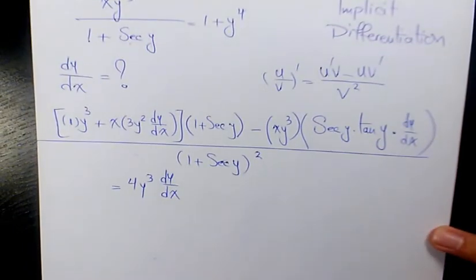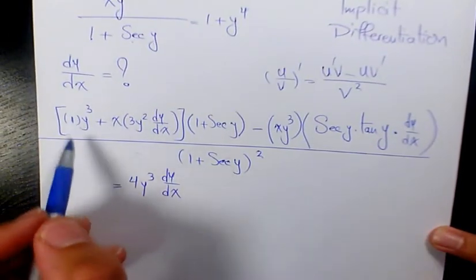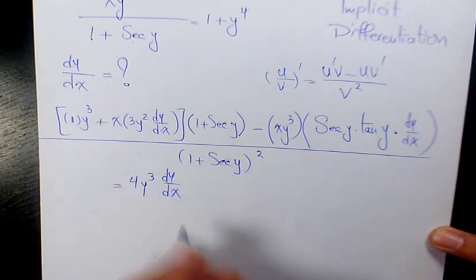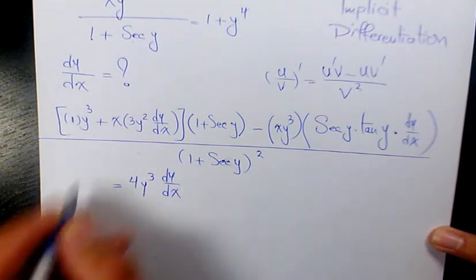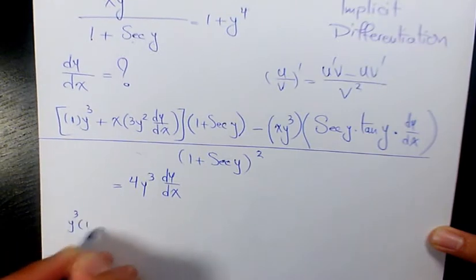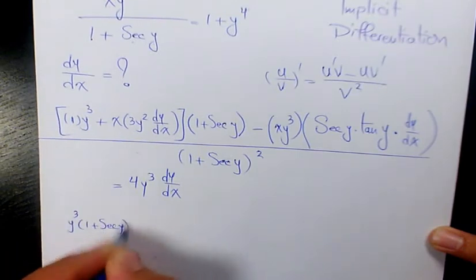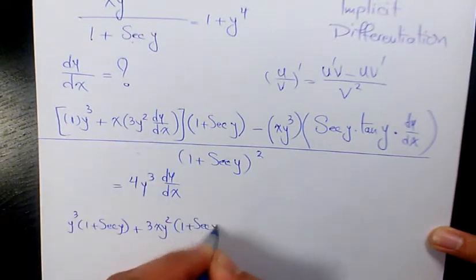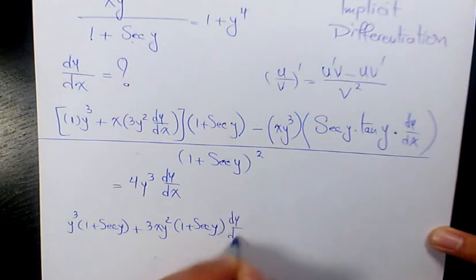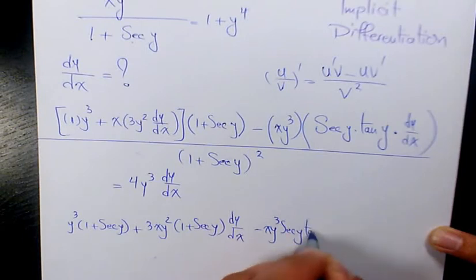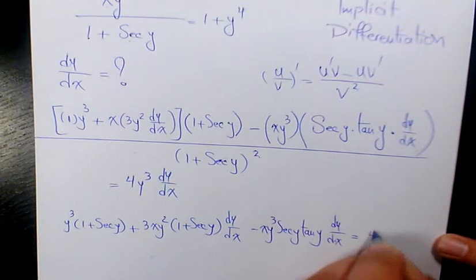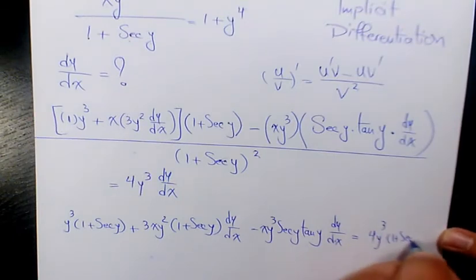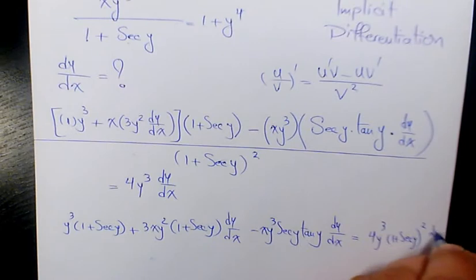Now we need to start simplifying. We do cross multiplication first. We get y cubed times 1 plus secant y, plus 3xy squared times 1 plus secant y dy over dx, minus xy cubed secant y tan y dy over dx, equals 4y cubed times 1 plus secant y squared times dy over dx.